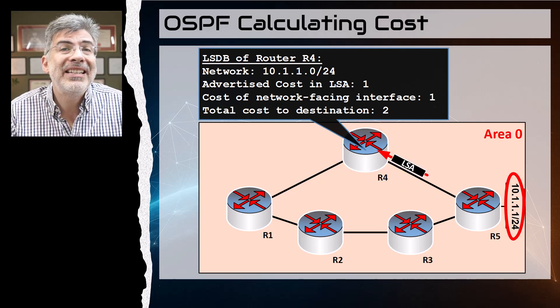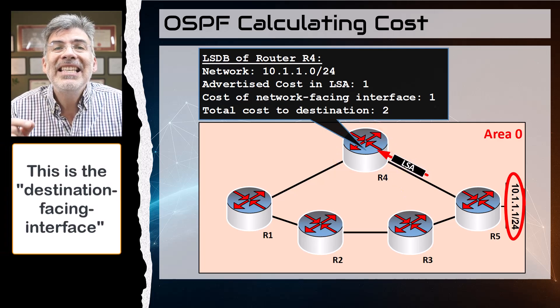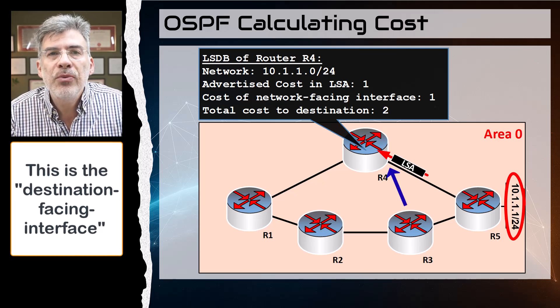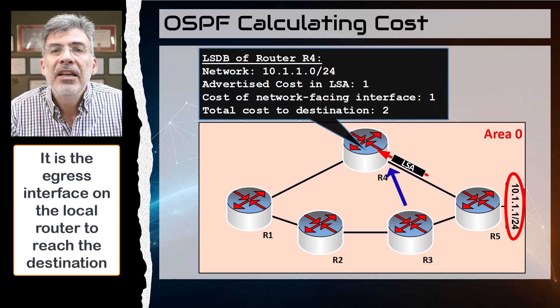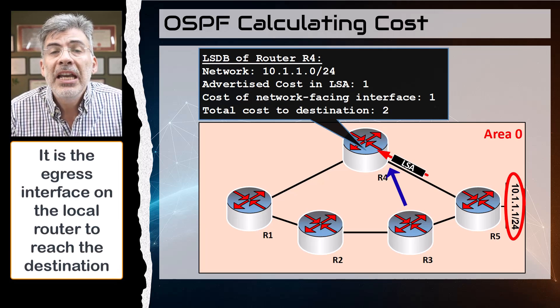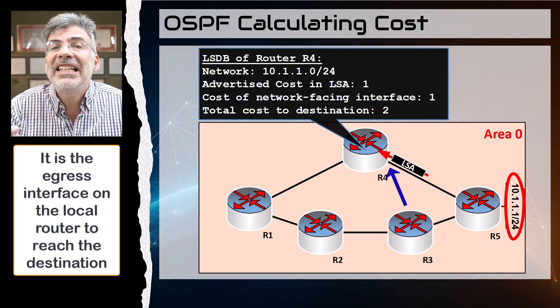When R4 receives this LSA with this network in it, it examines the cost of this interface here. This is the interface that is facing the destination network. In other words, it is the egress interface that will be used to get to that destination.